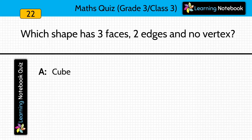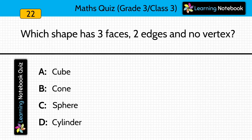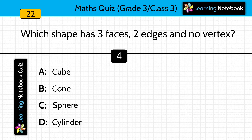Which shape has 3 faces, 2 edges and no vertex? Options: cube, cone, sphere or cylinder? Answer is cylinder.